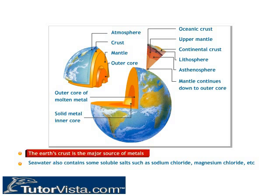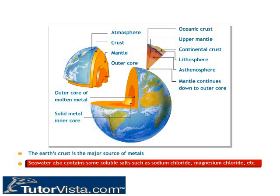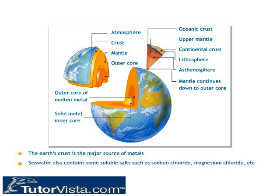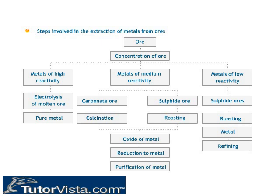The earth's crust is the major source of metals, and seawater also contains some soluble salts such as sodium chloride and magnesium chloride. The elements or compounds which occur naturally in the earth's crust are known as minerals. Naturally occurring materials or compounds which are a combination of metals with other elements are called minerals. Such rocks and stones are called mineral ores, and metals have to be extracted from them by various chemical processes.